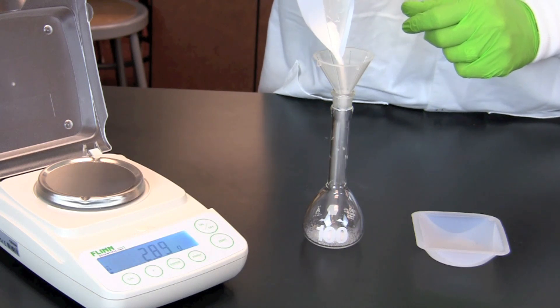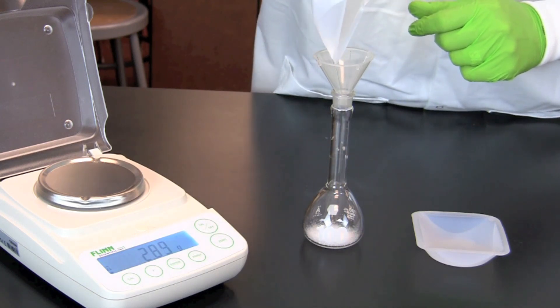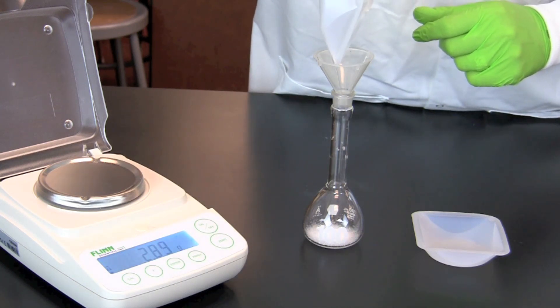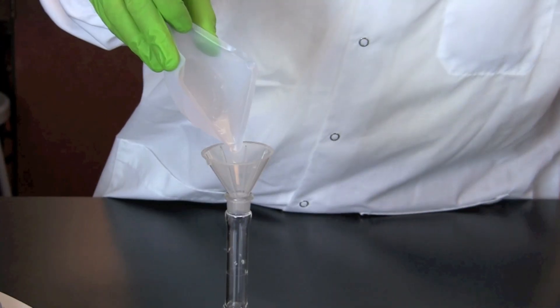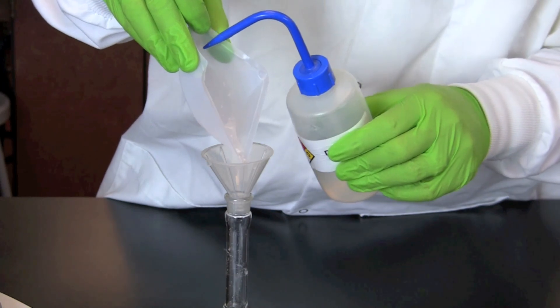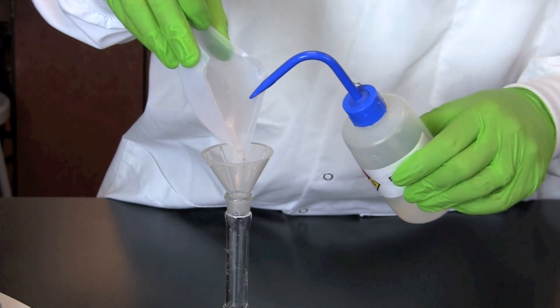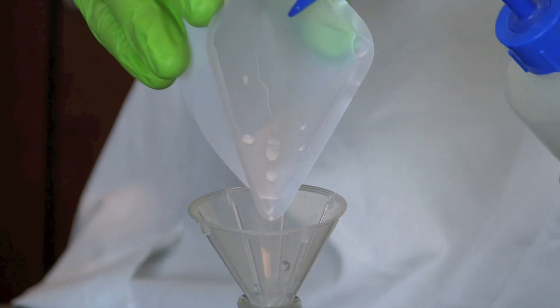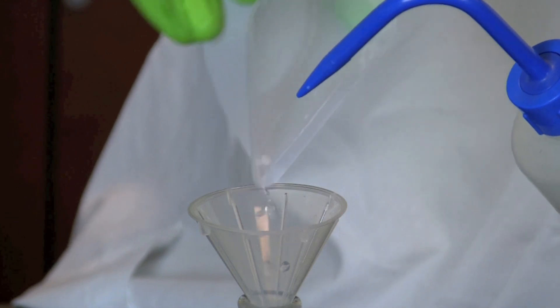We then take the weigh boat with the correct amount of sodium chloride and transfer it into the flask. Use a squirt bottle filled with distilled water to rinse the remaining sodium chloride crystals from the weigh boat into the funnel. Notice that the weigh boat is hydrophobic and repels water.